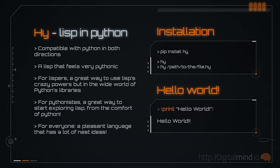You can find a link to hi-mode for Emacs in the description. To write a hello world application, you just type print hello world enclosed in parentheses. Really simple.